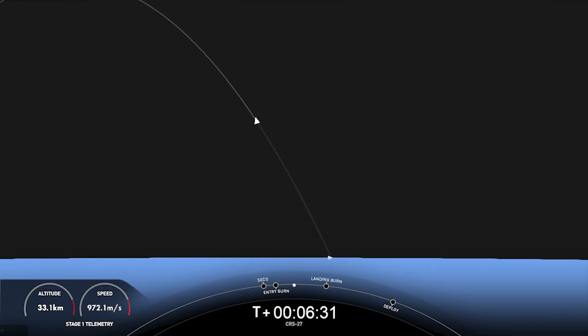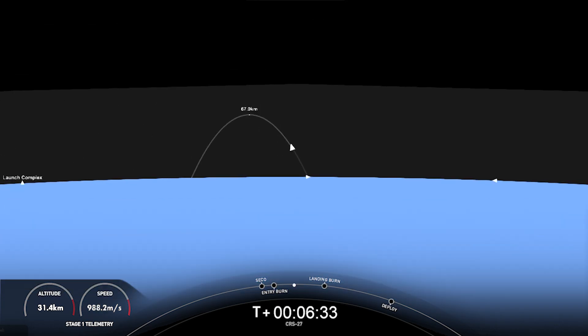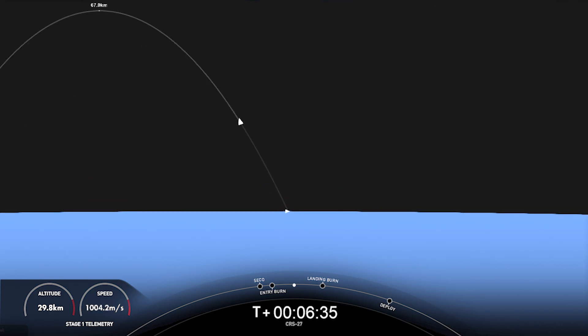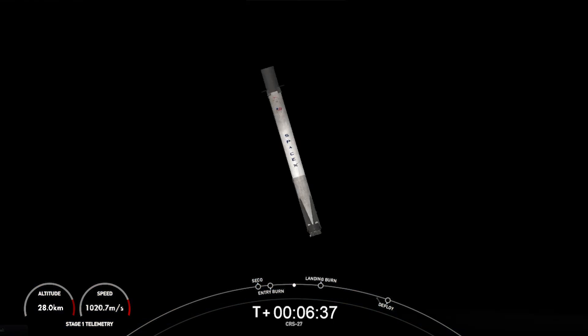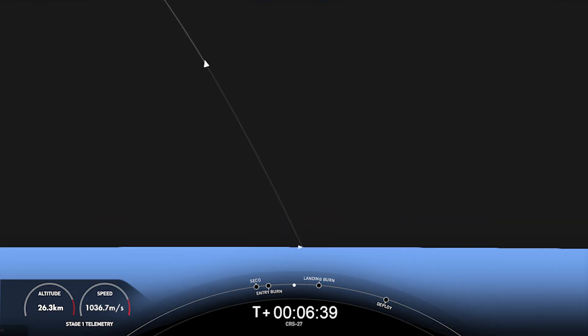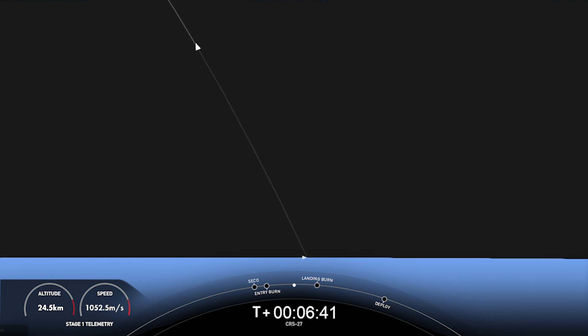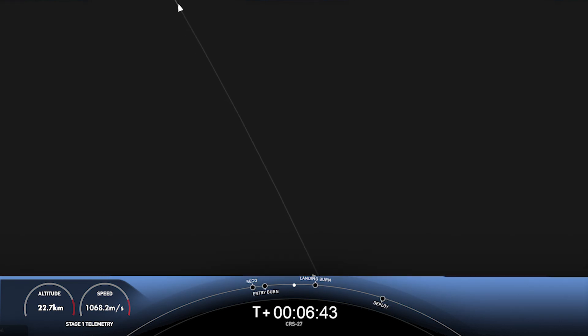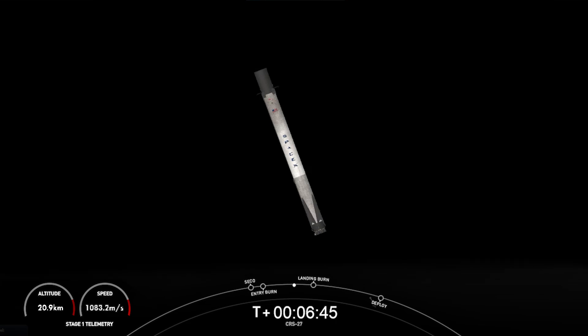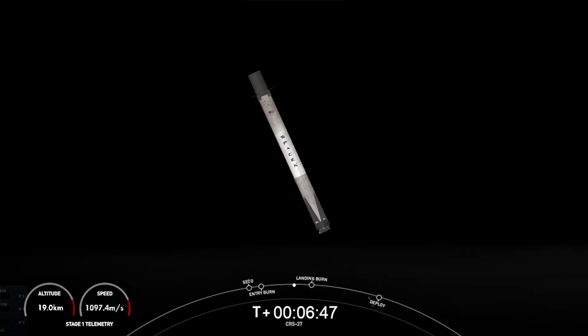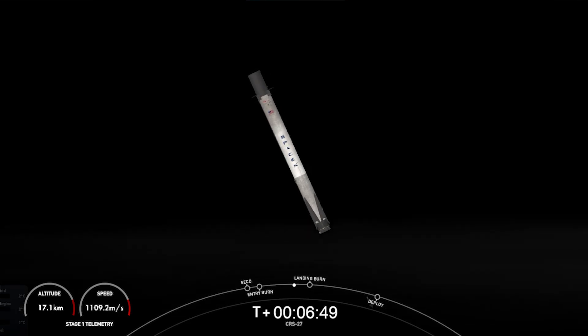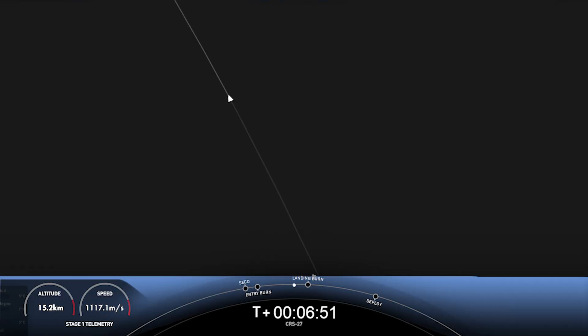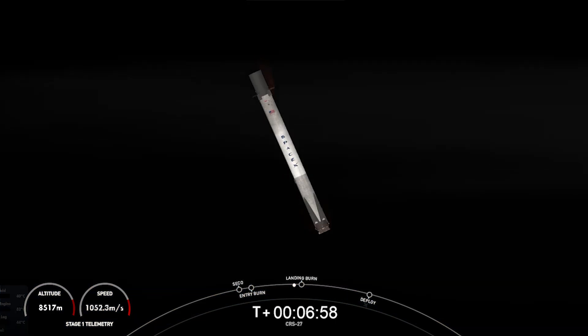Now, as we get closer to the first stage landing, it's good to note that the Falcon 9 first stage is equipped with four landing legs made of state-of-the-art carbon fiber with aluminum honeycomb. And these are placed symmetrically around the base of the rocket and deployed just prior to landing. If successful, this landing will mark the 178th time that we've recovered a first stage booster, including both Falcon 9 and Falcon Heavy missions.